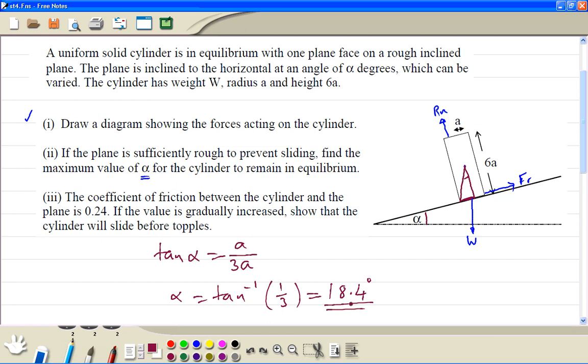If this angle is greater than 18.4, then this is the line gravity is acting, then it will go outside the surface of this object, then it will topple. So this is the maximum angle we can have, 18.4.